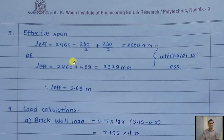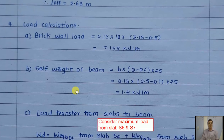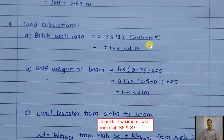The effective span is calculated as the lesser of: clear span plus half left support width plus half right support width = 2690 mm, or clear span plus effective depth. So l_eff = 2.69 m. For load calculation, the beam supports a brick wall. Wall thickness is 0.15 m, density 18 kN/m³. Floor-to-floor height is 3.15 m minus 0.5 m depth of the second floor beam, giving a brick wall load of 7.15 kN/m. Self-weight of the beam projection below slab is 1.5 kN/m.